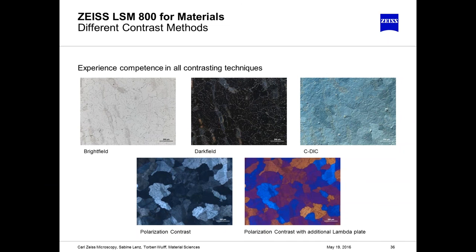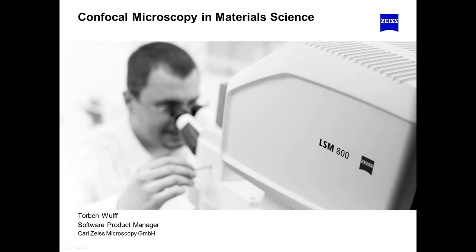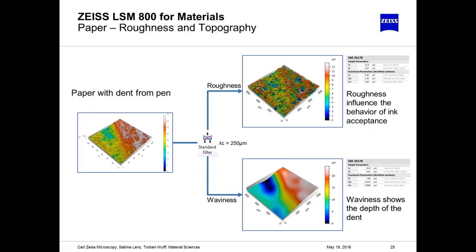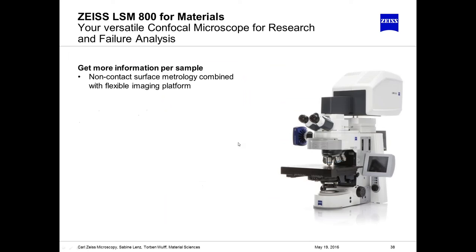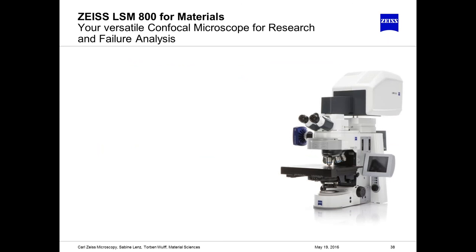And that directs me to the summary of this talk. We talked about the general benefits of the LSM 800 for materials and explained the confocal principle. With the application examples, we got an overview of the wide solutions we can provide with the LSM 800 for materials. To close: the Zeiss LSM 800 for materials is your versatile confocal microscope for research and failure analysis.